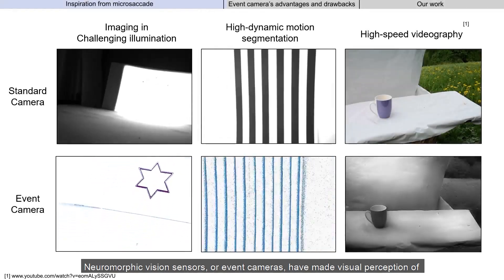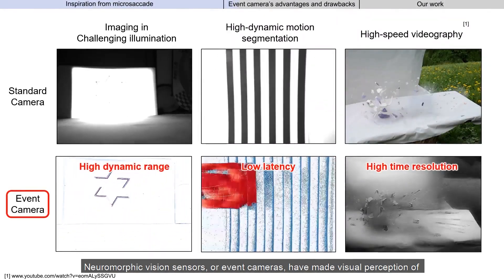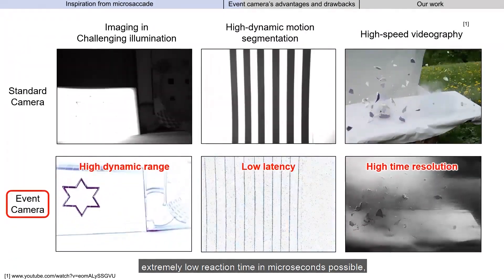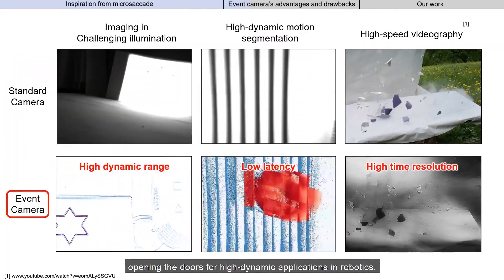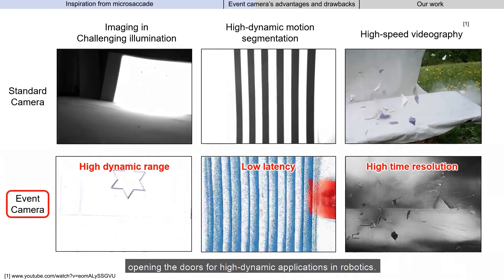Neuromorphic vision sensors, or event cameras, have made visual perception of extremely low reaction time in microseconds possible, opening the doors for high dynamic applications in robotics.